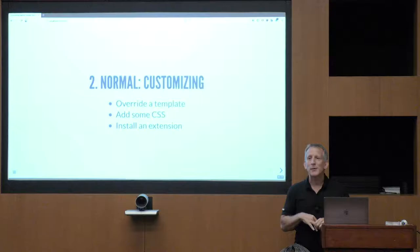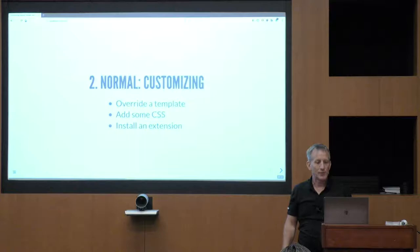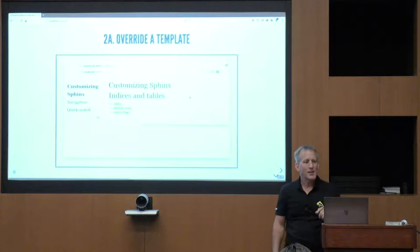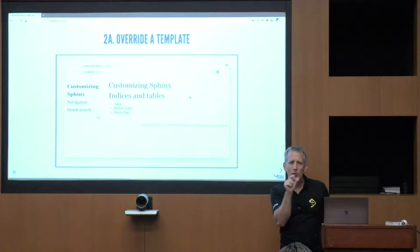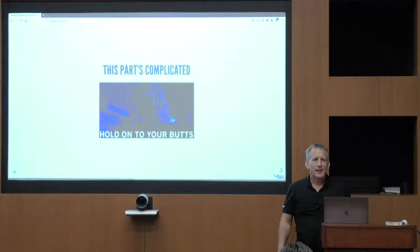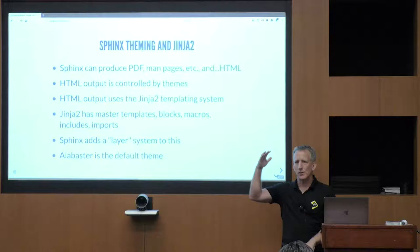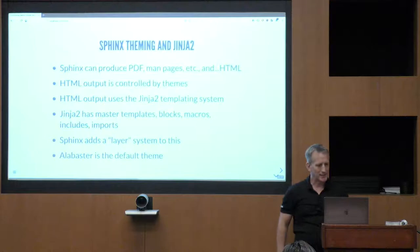Let's talk about the game of 'where did that pixel come from.' We're going to override a template, add some CSS, and install a third-party package and extension. This is still painting within the lines, so to speak. Let's say this is out of the box, and where that yellow is, I want to put a little paragraph just after that explaining how to use search. It just gets weird, because there are so many architectures and abstractions and indirections that have accumulated over the years.